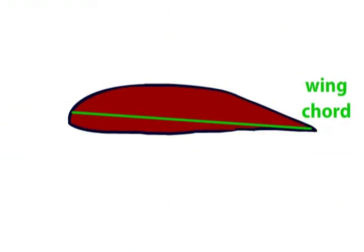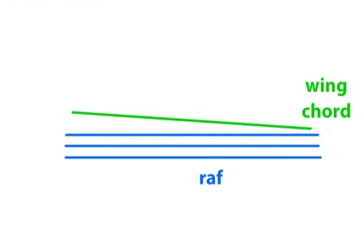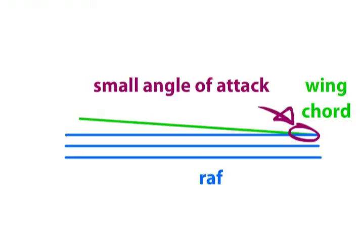The angle of attack is defined as the angle between the chord of the wing and the relative air flow. So you might have a low angle of attack, as in this picture, where the relative air flow and the wing chord lines are nearly parallel, and this will produce a relatively small amount of lift. You may also have a higher angle of attack,